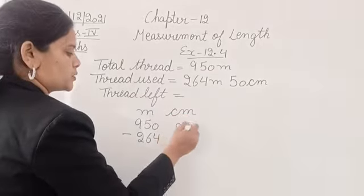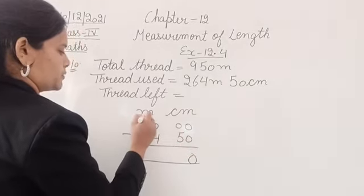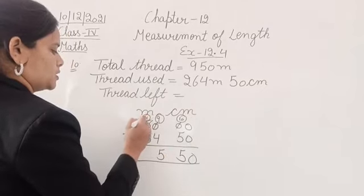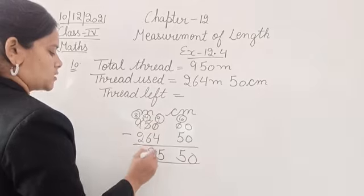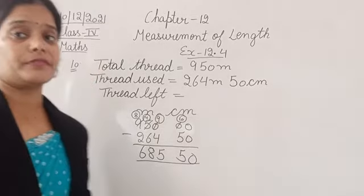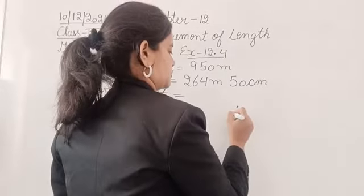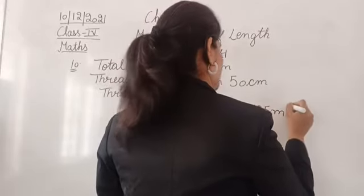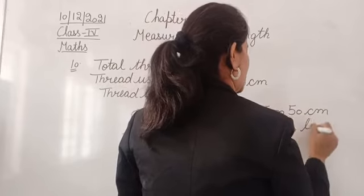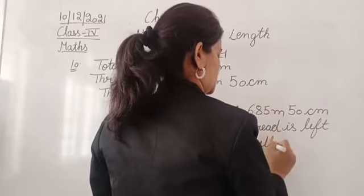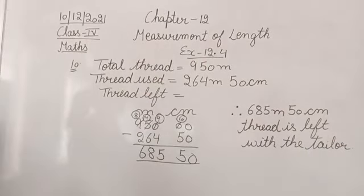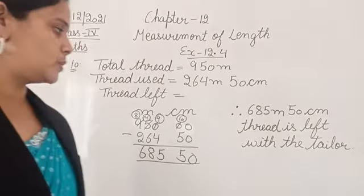Since there are no centimeter digits, we put two zeros. Borrowing: this becomes 4, 9, 10. 10 minus 5 is 5. 9 minus 4 is 5. 14 minus 6 is 8. 8 minus 6 — so the thread left is 685m 50cm. Therefore 685m 50cm of thread is left with the tailor.